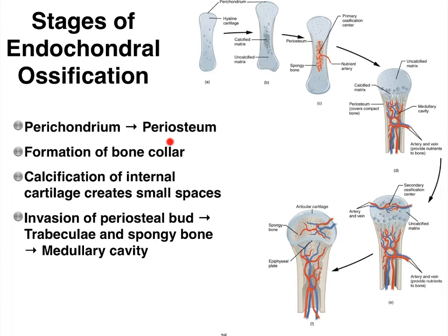Any time we have periosteum, we always also have osteoblasts, osteoclasts, and we need to assume that there are also osteoprogenitor cells that can give rise to the osteoblasts. If we have osteoblasts, they can start building bone tissue — in other words, we're going to see that we can begin to form a bone collar.